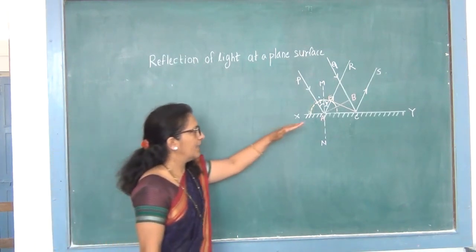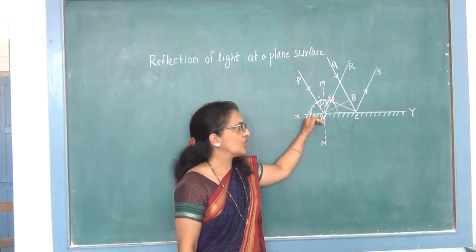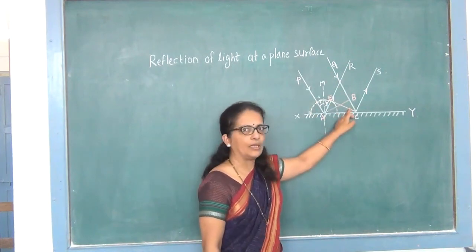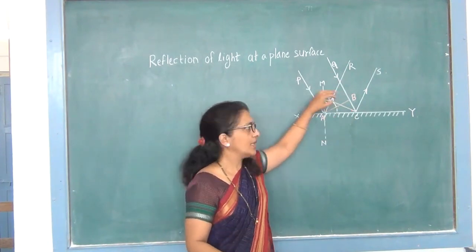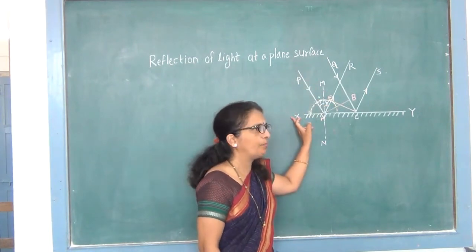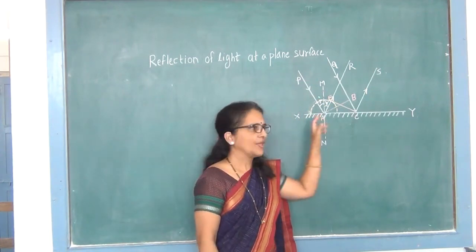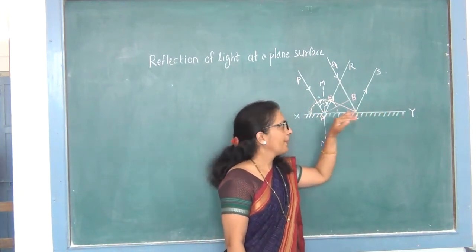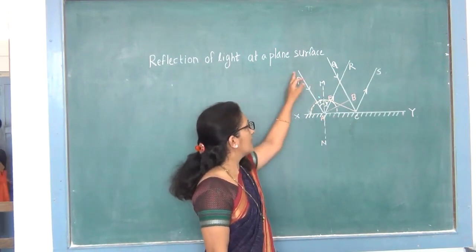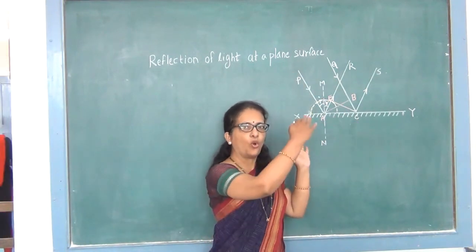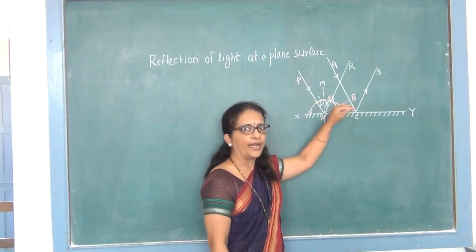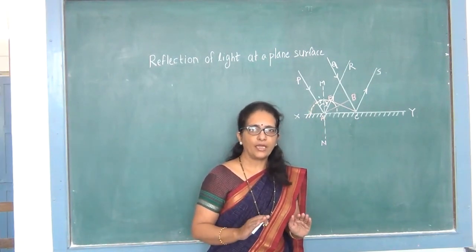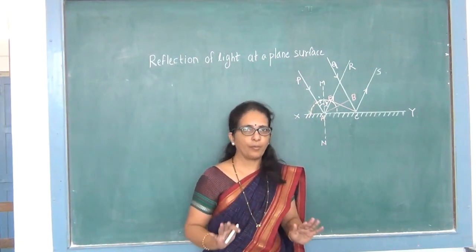Consider this diagram. PA and QB are two rays which are incident obliquely on the plane reflecting surface XY. XY is the reflecting surface. We show the reflecting surface by this symbol. Now, we know that rays of light and wavefront are perpendicular to each other. That is the main point you have to remember always.